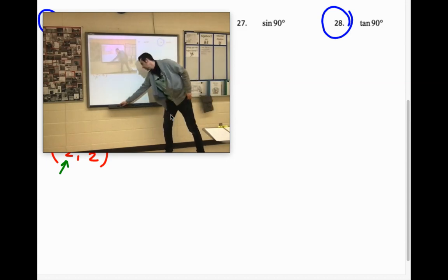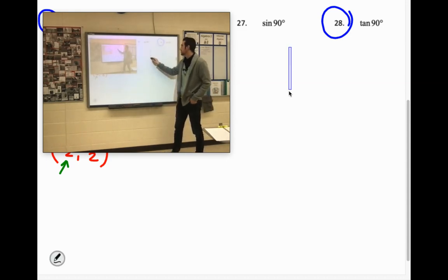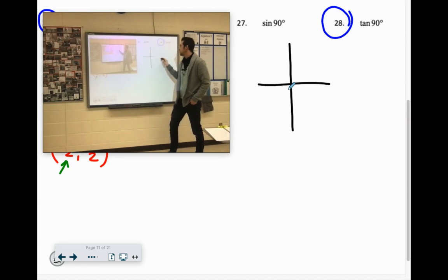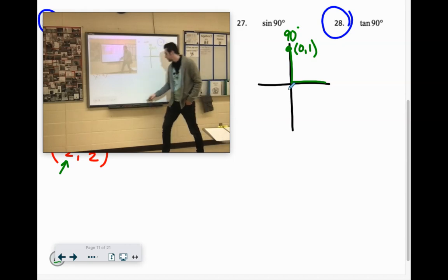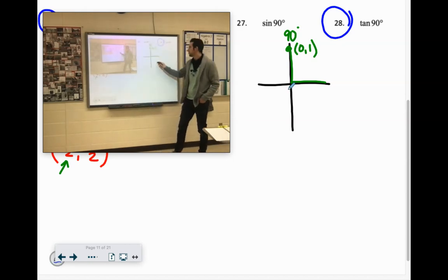Tangent of 90 degrees. So 90 degrees, yes we know, it goes right here. 90 degrees. Oh, it's quadrantal, which means the coordinate would be zero one.